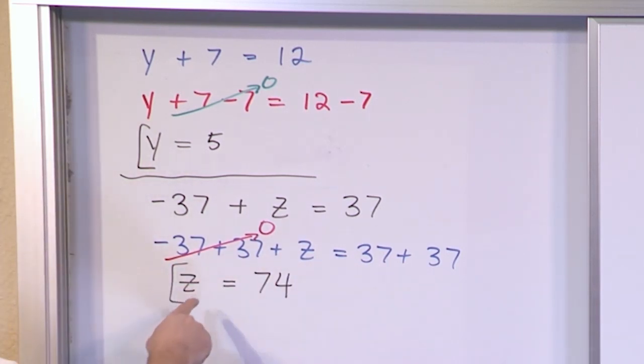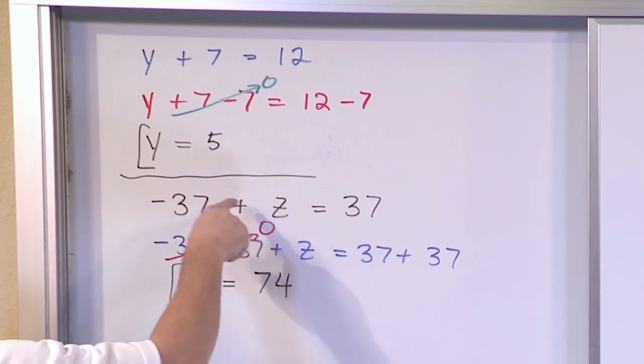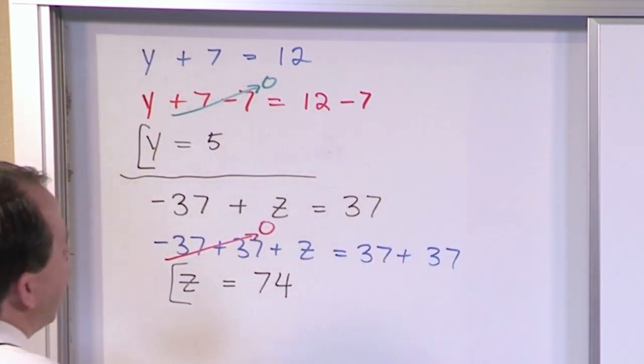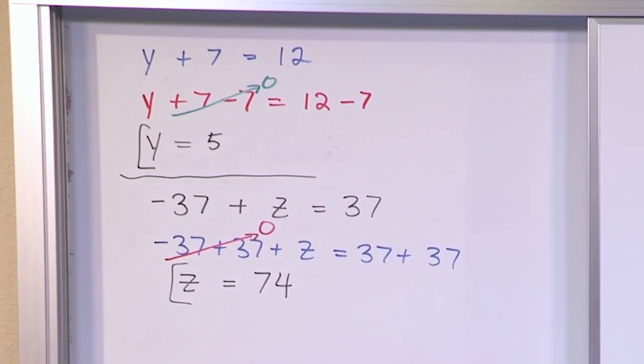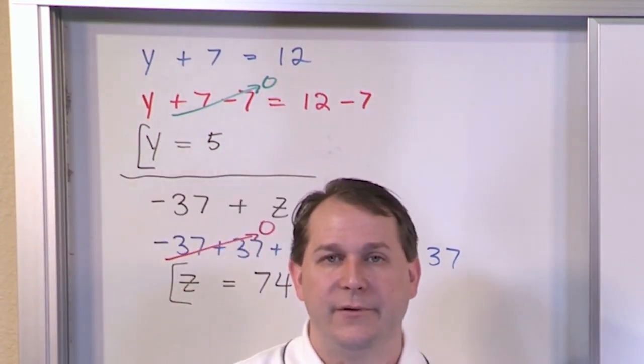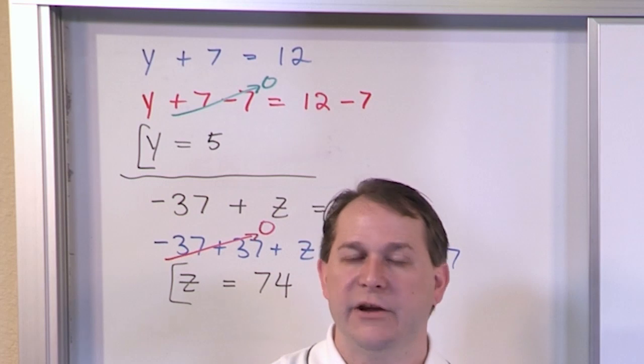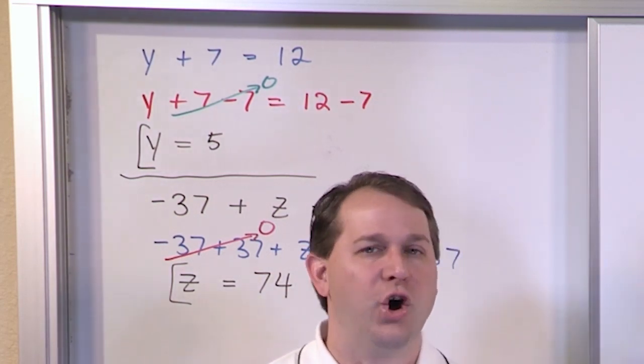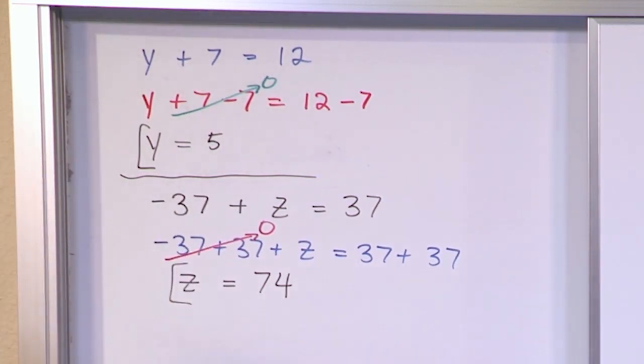And again, you can check it by putting 74 in for z. Negative 37 plus positive 74 is going to give you positive 37 for a final answer. And I encourage you to check that just to make sure. In fact, honestly, that is really one of the coolest things about algebra, is that once you get an answer, you can always check it. And you always know if you're right. So if you get wrong answers in algebra, there's no reason because you can always check your answers to make sure you're getting it right.